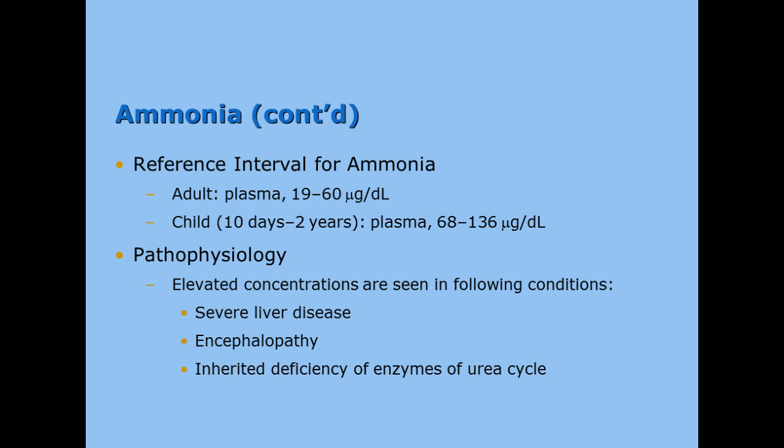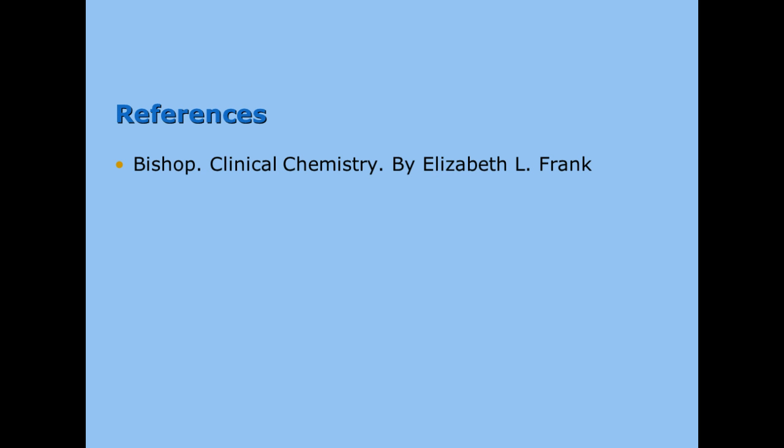The normal ammonia level is 19 to 60 micrograms per deciliter — a very tiny amount. In children, it can be a little higher. We find it increased in liver disease, encephalopathy, or inherited deficiency of urea cycle enzymes. That concludes our section on NPNs.